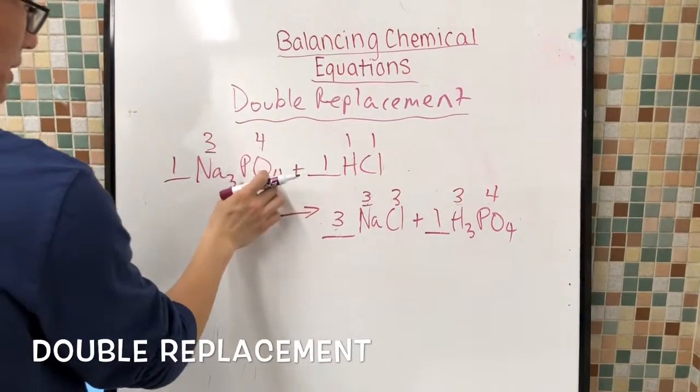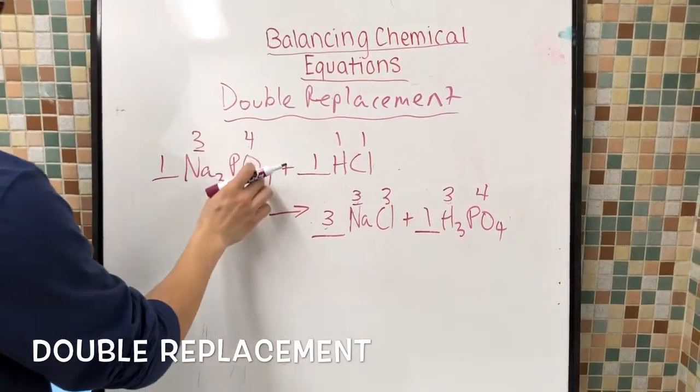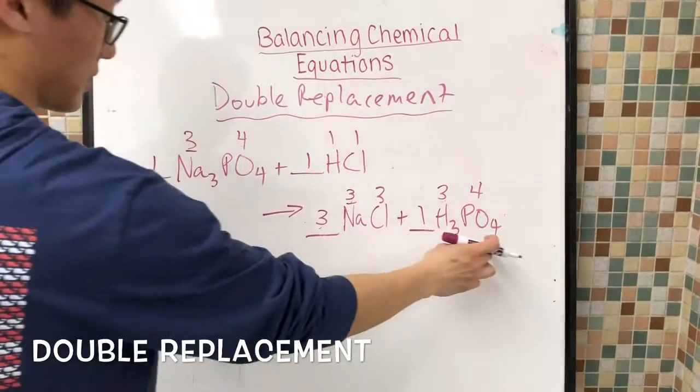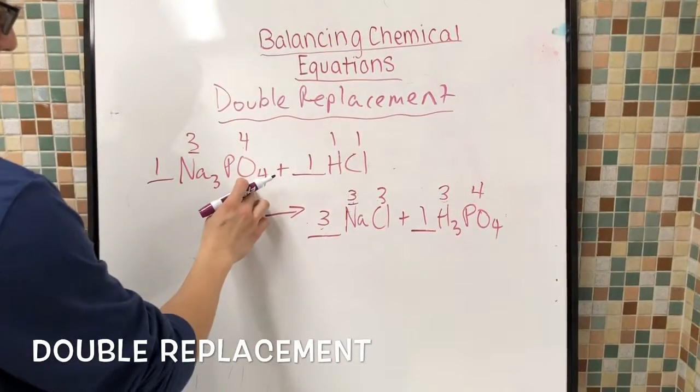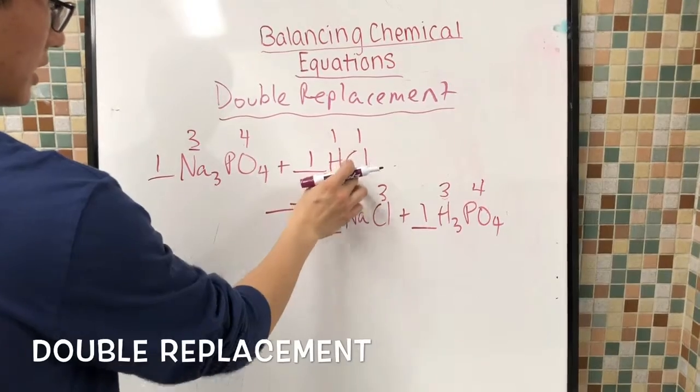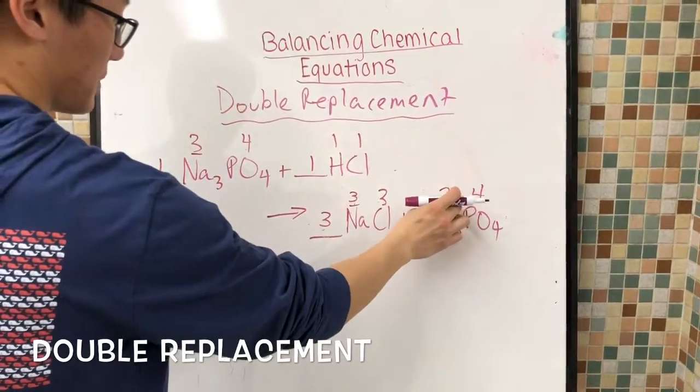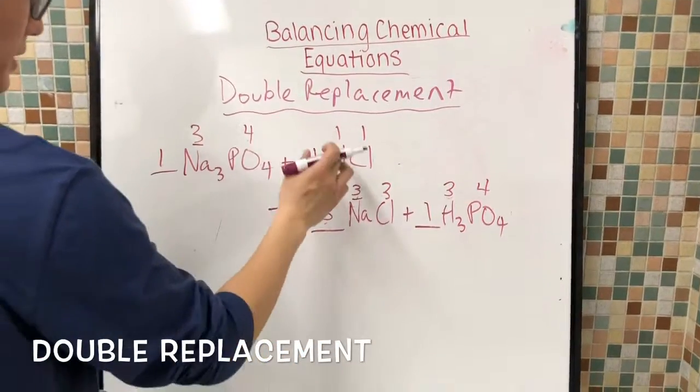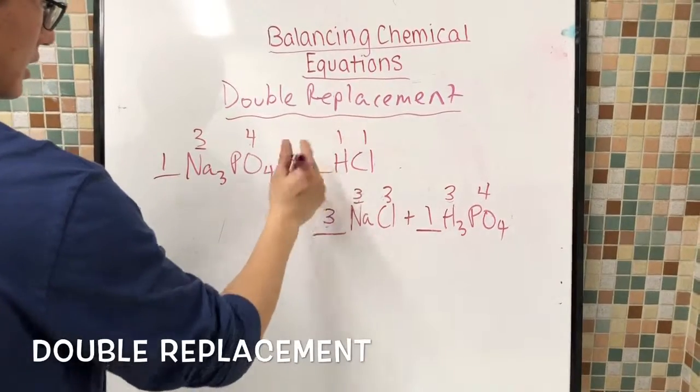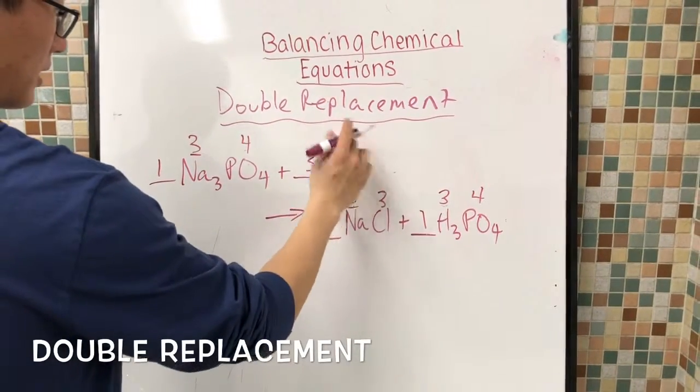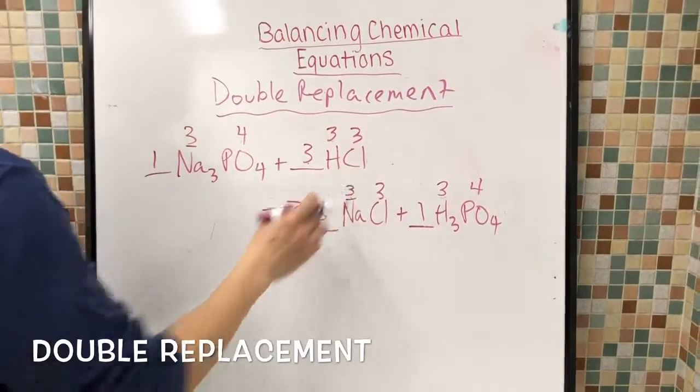So on to PO. So PO here has four, and PO here has four, so that's good. And hydrogen has one compared to the three hydrogen atoms here. So what we want to do is switch this to three. And these turn into three as well.